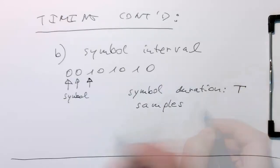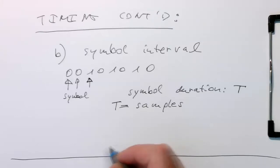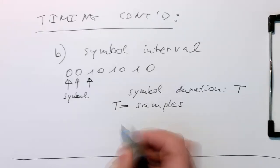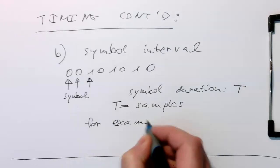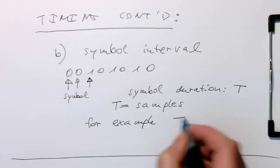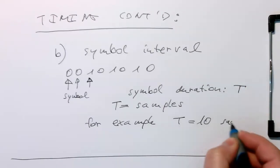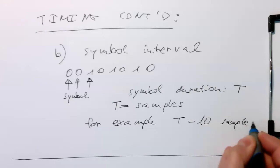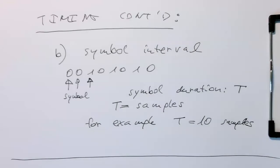For example, we could say T is 10 samples. Okay, so with this information, we can basically build up our modulated AM signal.